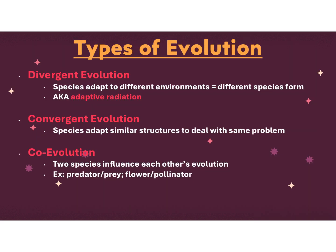The different types of evolution are divergent, convergent, and co-evolution. Divergent is when a species adapts to different environments and different species form — they split, like adaptive radiation. Convergent is where two species encounter the same problem and fix it the same way — they don't have a relationship but kind of come together. Co-evolution is where two species evolve in response to each other, like a predator-prey relationship or a flower-pollinator relationship, evolving on the same lines together.